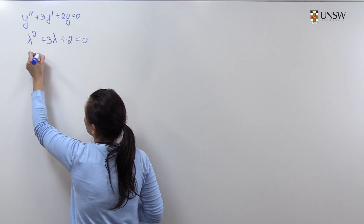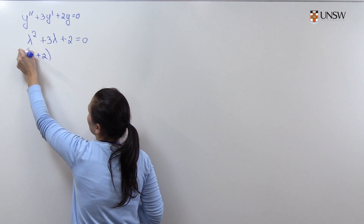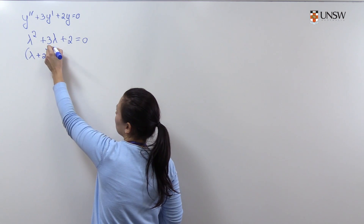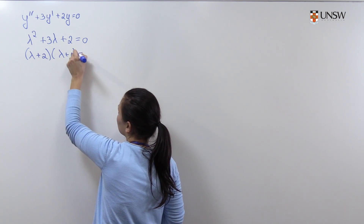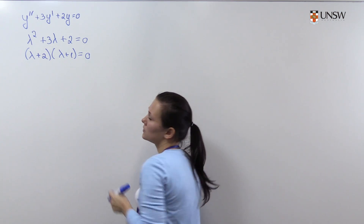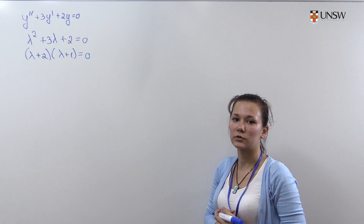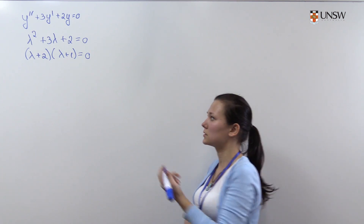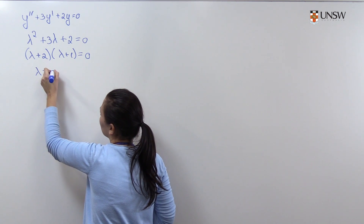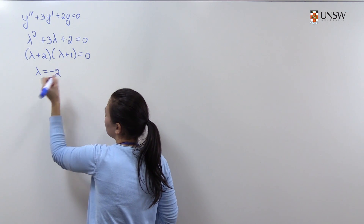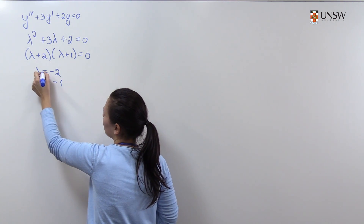This quadratic equation can be written as (lambda + 2)(lambda + 1) = 0. Therefore the roots of this quadratic equation are simple: lambda equals minus 2 and minus 1.